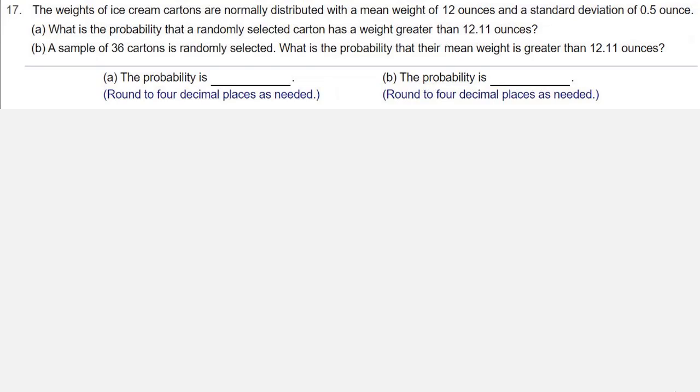A. What is the probability that a randomly selected carton has a weight greater than 12.11 ounces? B. A sample of 36 cartons is randomly selected. What is the probability that their mean weight is greater than 12.11 ounces?